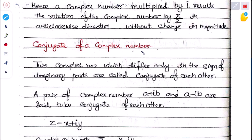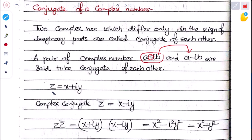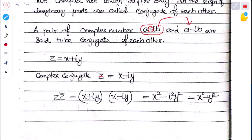Conjugate of a complex number: two complex numbers that differ only in the sign of their imaginary parts are conjugates. If z = x + iy, then the conjugate is z̄ = x − iy. Multiplying z·z̄ = (x + iy)(x − iy) = x² − i²y² = x² + y², using a²− b² and i² = −1. These are the general definitions of complex numbers.